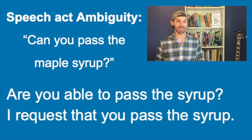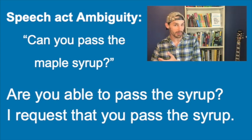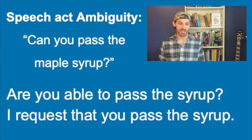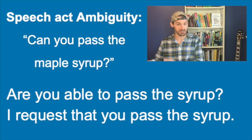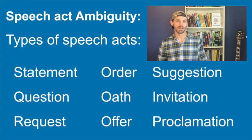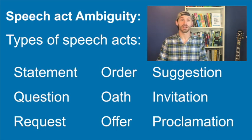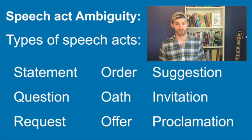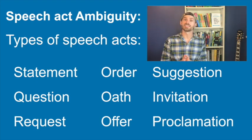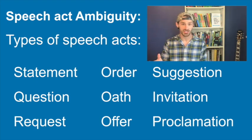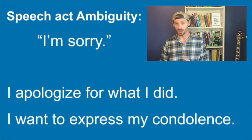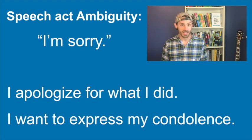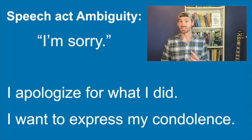We're going to do a whole video later in this series about pragmatics, so stay tuned. Pragmatic ambiguity occurs when context does not provide enough information to clarify a statement, and it can cover several other types of ambiguity we've discussed. Speech act ambiguity is what happens when it's not clear what a speaker is trying to accomplish with their sentence. For example, when you say "can you pass the maple syrup?" — are you asking about the other person's physical capability, or requesting that they do it? Any sentence we utter is meant to accomplish something, and it's not always clear which category it falls under. For instance, "I'm sorry" often serves as an apology, but said at a funeral, it's hopefully just an expression of condolence.